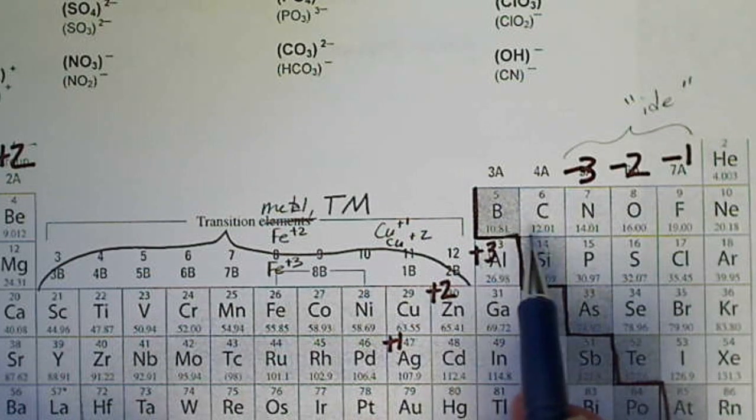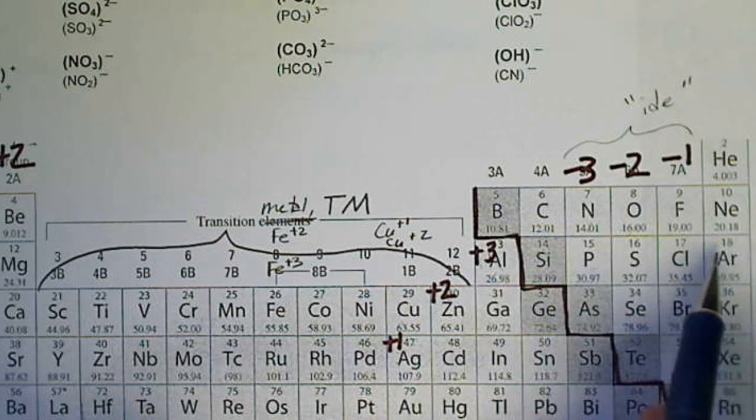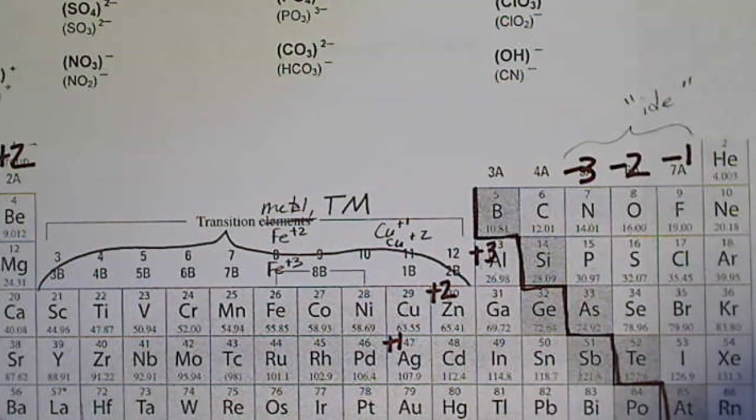Copper plus 1 can get together with nitride, oxide, or fluoride. So we're going to do some examples there for the charges canceling to zero.